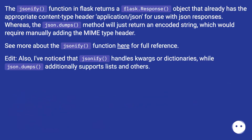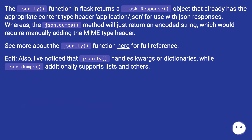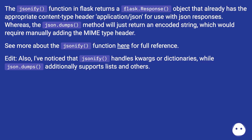The jsonify function in Flask returns a flask.Response object that already has the appropriate content type header — application/json — for use with JSON responses. Whereas the json.dumps method will just return an encoded string, which would require manually adding the MIME type header. See more about the jsonify function here for full reference.